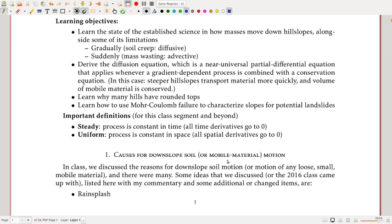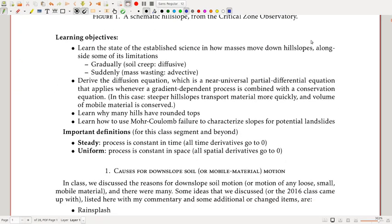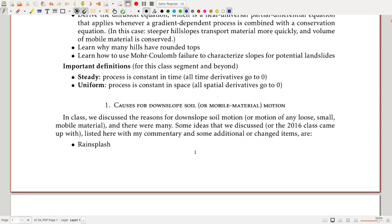And after that, we're going to go into the more Coulomb-failure potential. So those are the overall learning objectives. And I just want to bring up a couple of important definitions. So the first important definition is a process that is steady. And what that means is that the process is constant in time, so all time derivatives go to zero. So anything that has a d over dt of whatever, this goes to zero if steady.